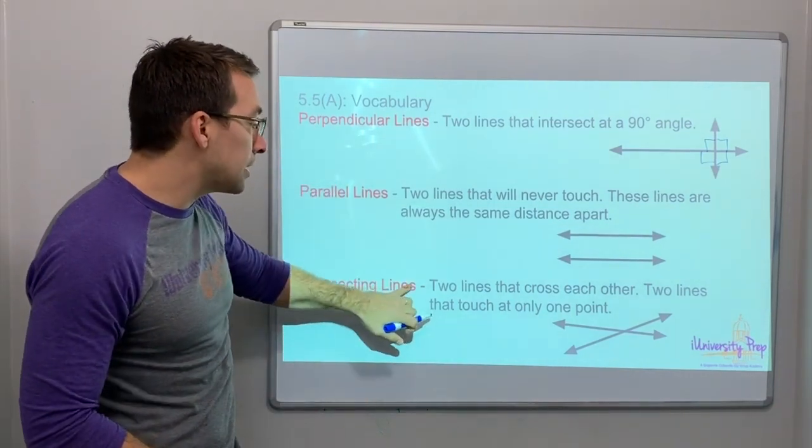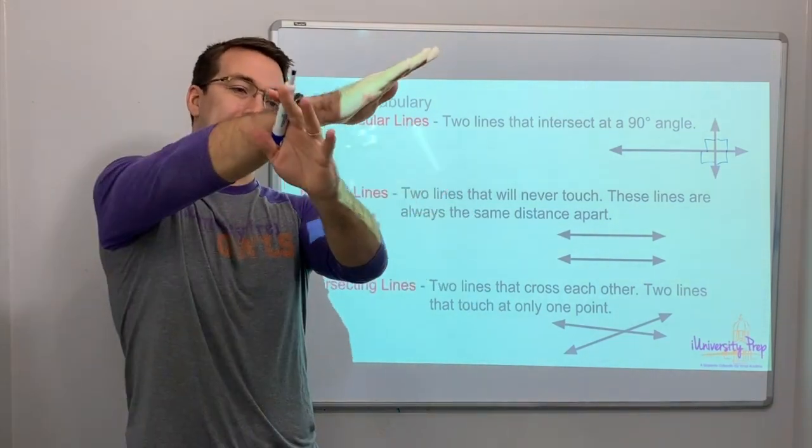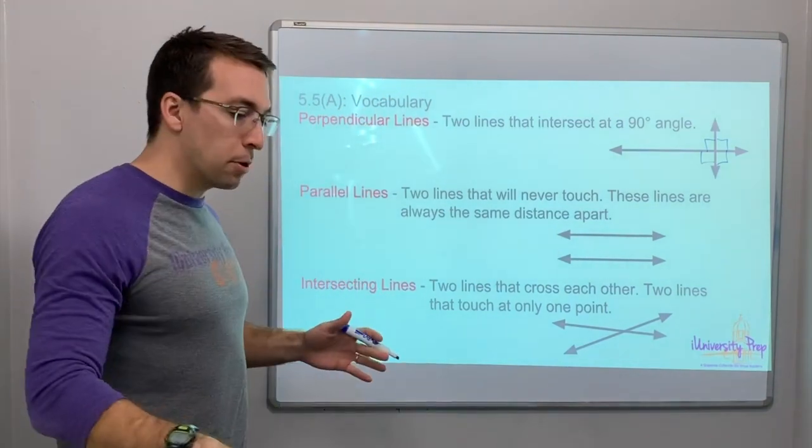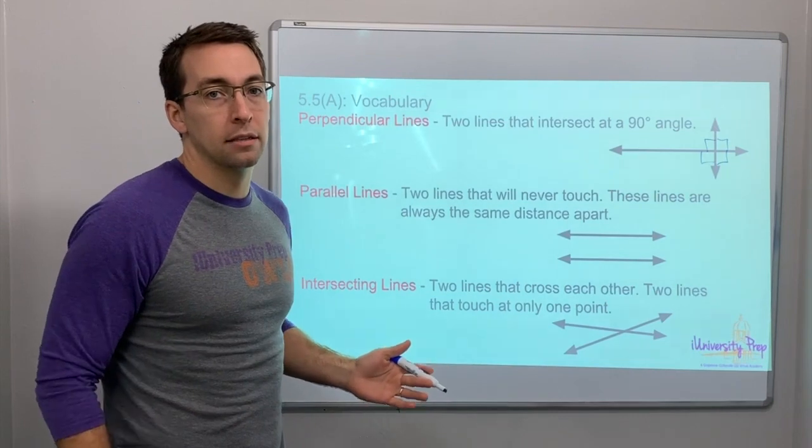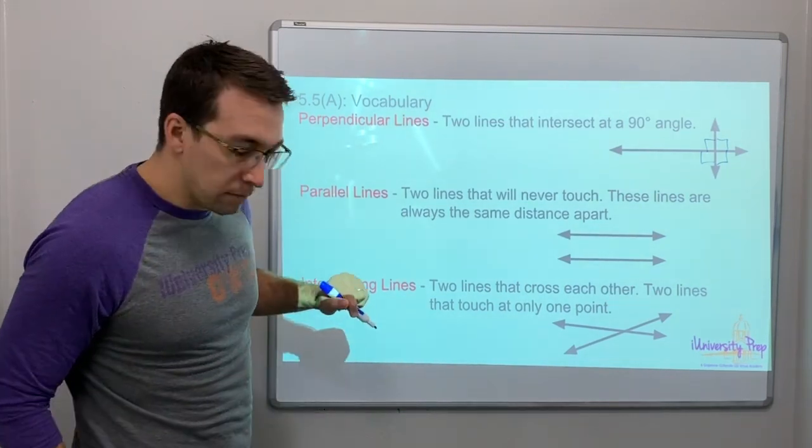Intersecting lines - two lines that at some point cross. They're not perpendicular, so they don't cross at 90 degrees, but they do intersect.